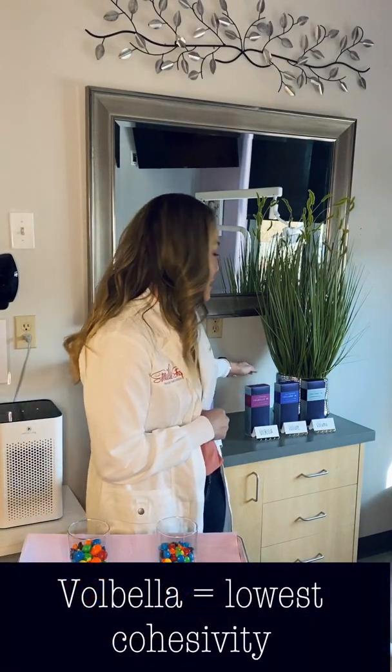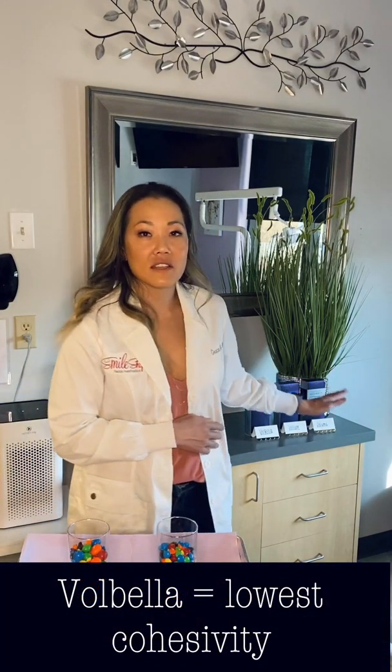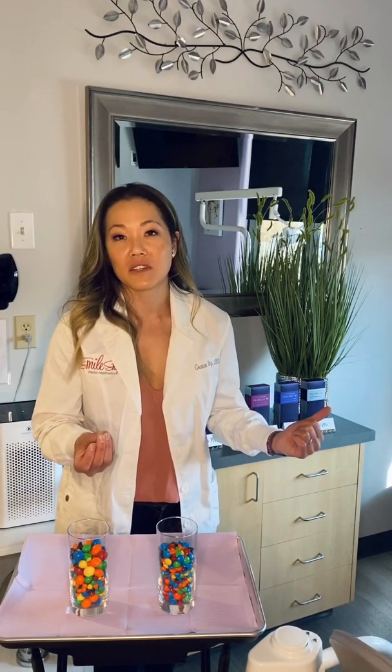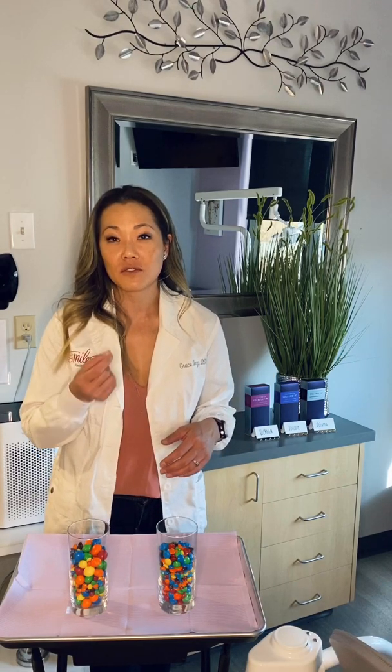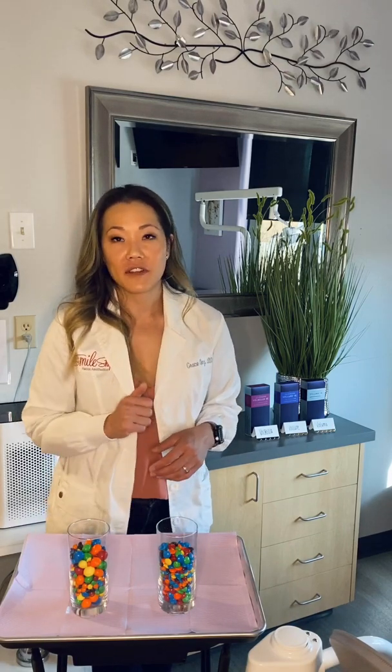Volbella, of all the fillers, is the least cohesive, so it has a tendency to spread out very well, but it still has good G' — meaning it's elastic and will still rebound a little bit. This makes it an excellent filler when you want a slight enhancement of your lips but don't really want anyone to notice. It gives a really nice smooth lip-gloss effect. It's also a great filler for fine lines and wrinkles right above the lips or any little areas etched into the skin.